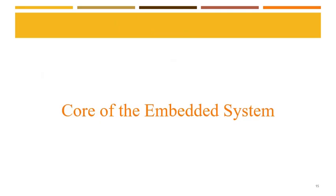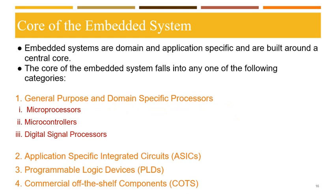We will now discuss each block of a typical embedded system, starting with the core. Embedded systems are domain and application specific and are built around a central core. The core falls into one of the following categories: general purpose and domain-specific processors; application-specific integrated circuits (ASICs); programmable logic devices (PLDs); and commercial off-the-shelf (COTS) components. General purpose and domain-specific processors are further divided into microprocessors, microcontrollers, and digital signal processors.